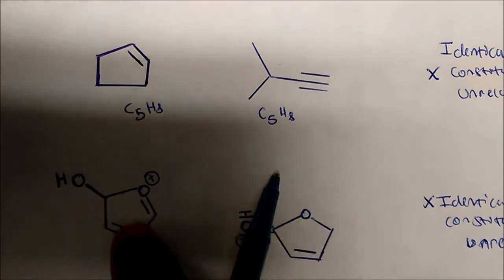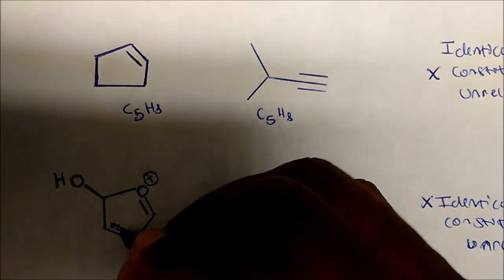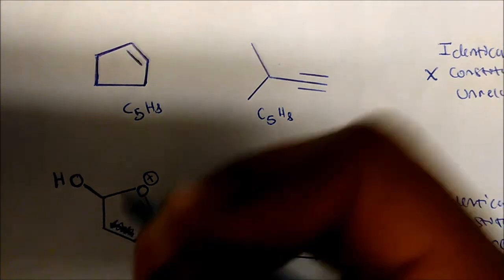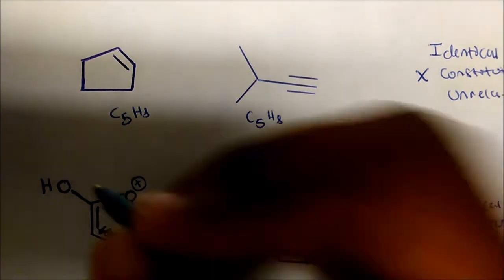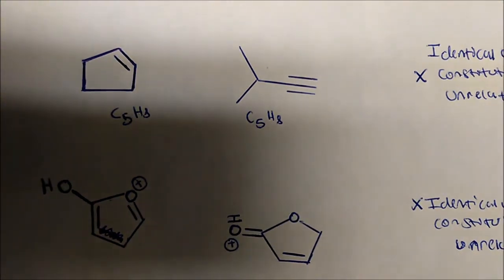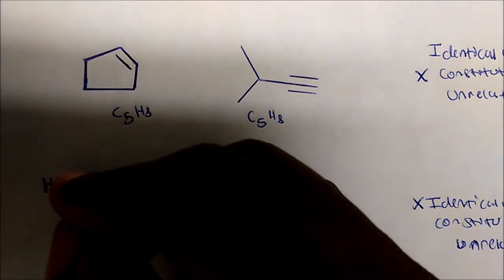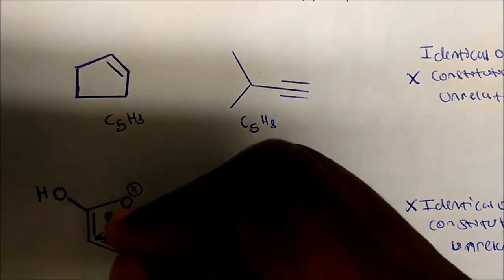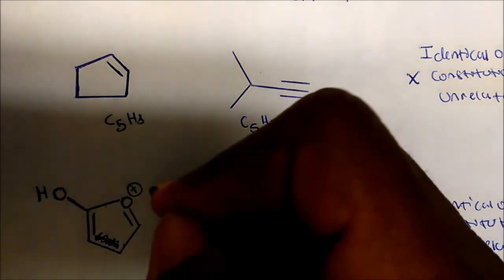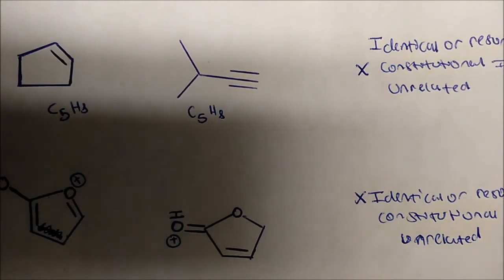Actually, I think I drew the structure wrong — the resonance doesn't make sense. This double bond shouldn't be here; it should be here. Now that makes sense — I'm sorry about that. So you can see all we're doing is taking the two lone pairs on the oxygen, forming a double bond, and moving this pi electron onto the oxygen to give you that neutral structure.